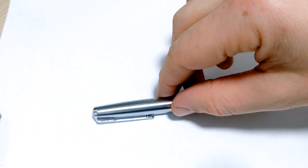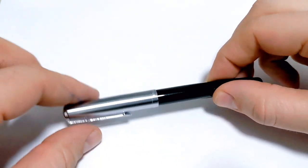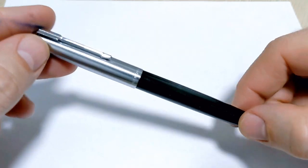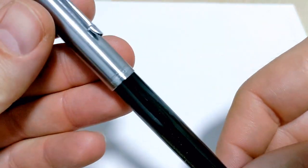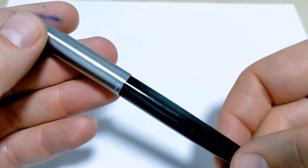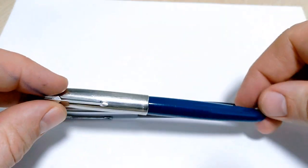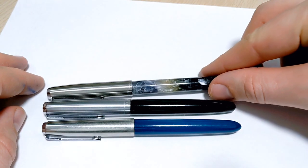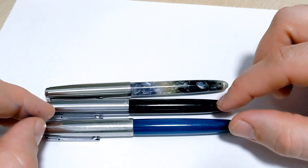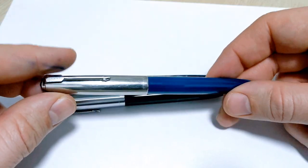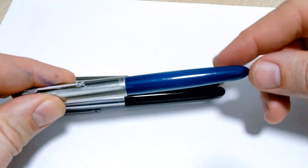We got a Wingsung 601 made in China. This is a direct competition with the Parker 51 and also the Jinhao 51a. The 51 is a super great pen and really popular right now because of the relaunch.